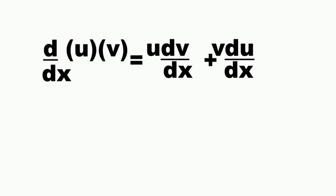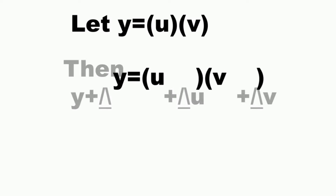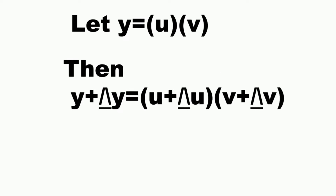To derive this, let y equal u times v. Then using the delta notation for the change of y, u, and v: y plus delta y is equal to the quantity u plus delta u, times the quantity v plus delta v.